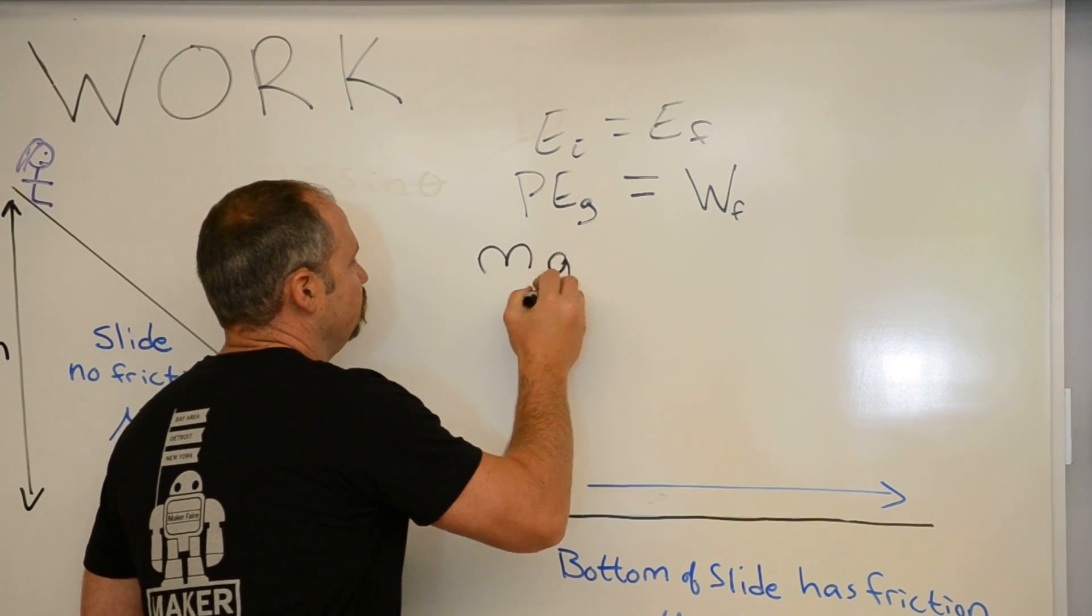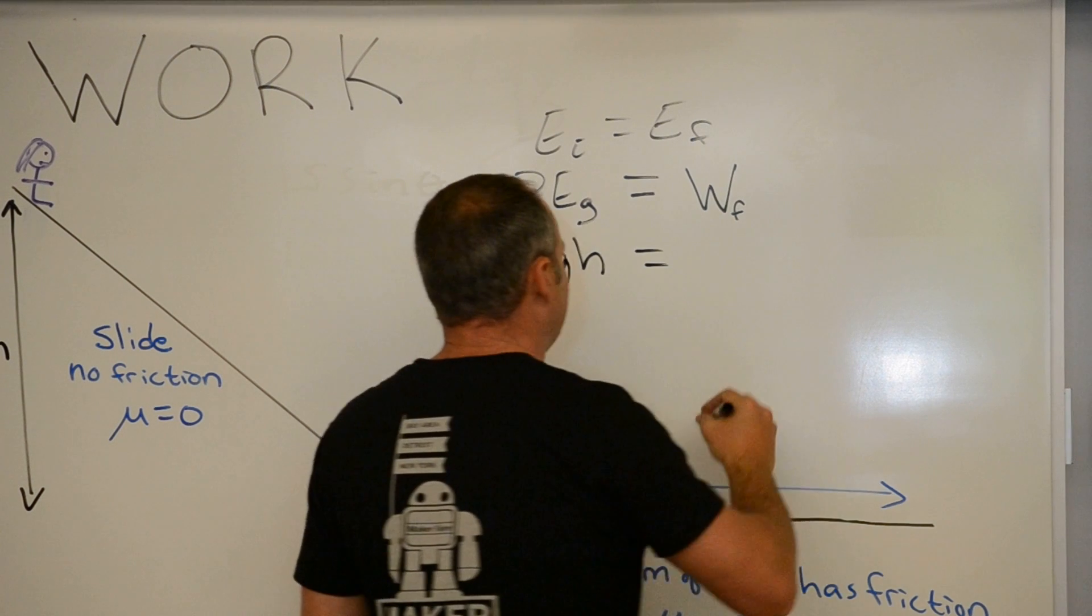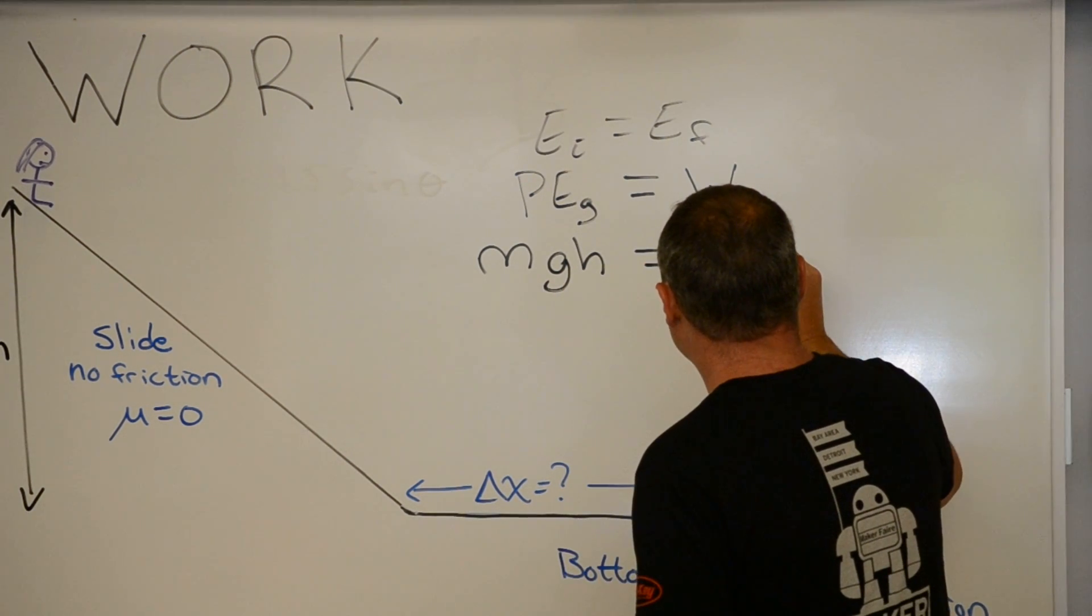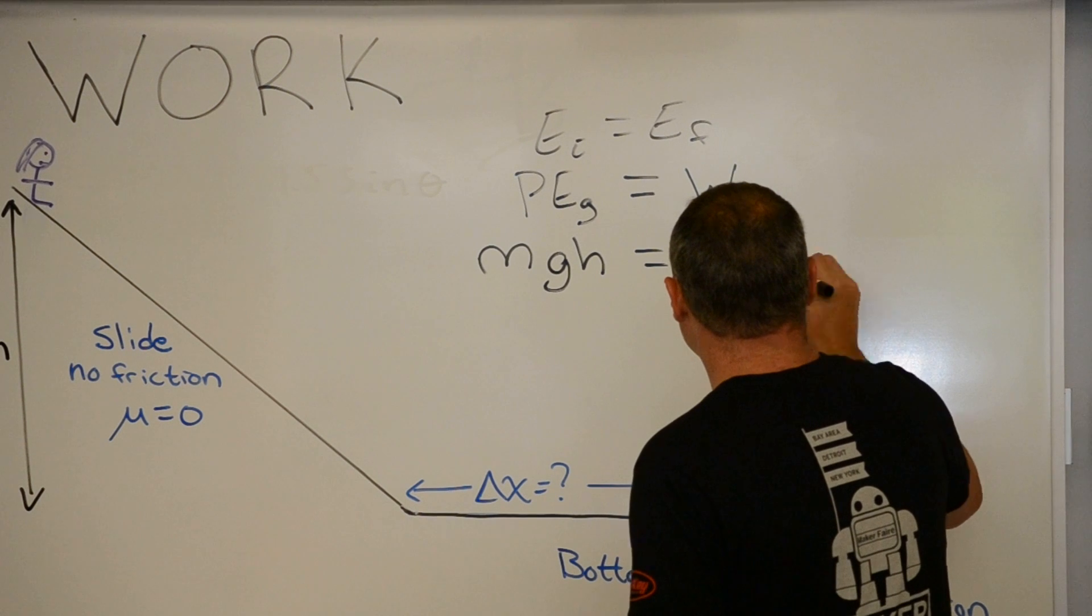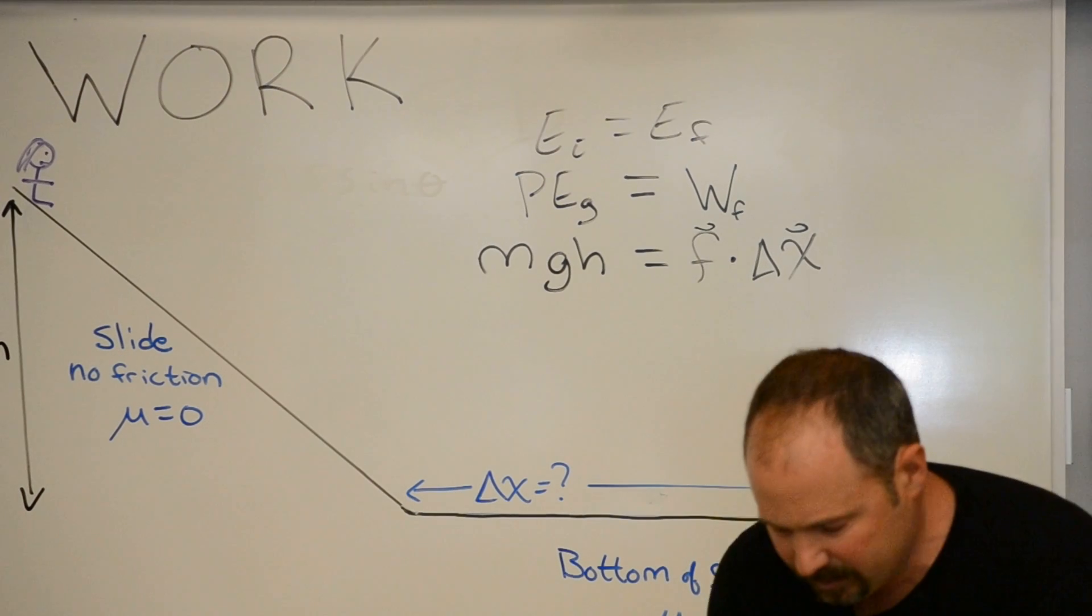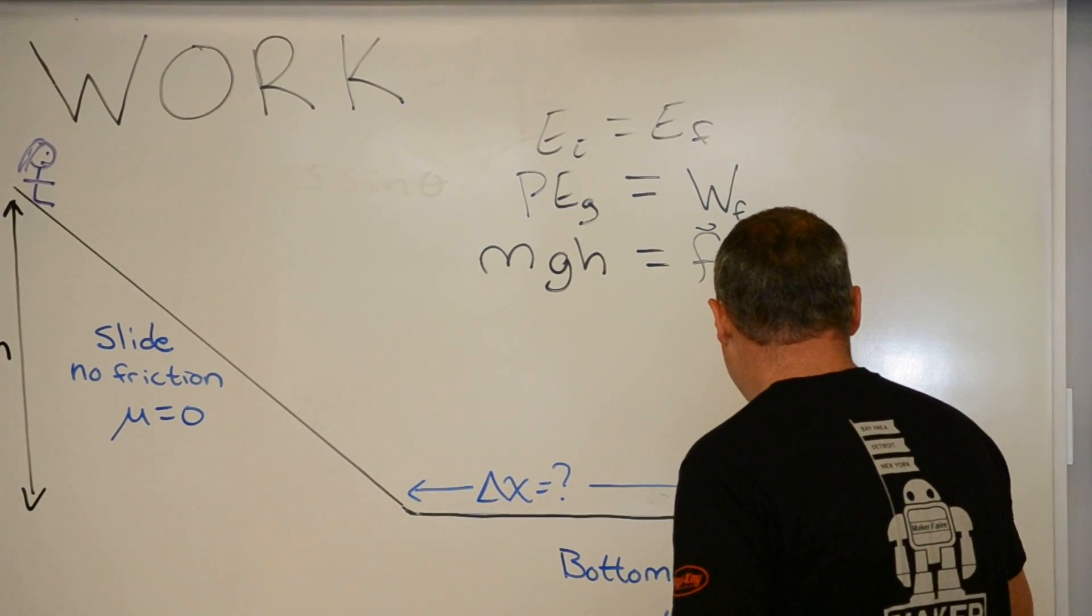Let's now work on calculating how far she went. Well, potential energy is mgh and that's equal to the work done by friction. We know that the work done by friction is the force of friction dotted into the displacement. So, let's draw the free-body diagram at the bottom. Let's say while she's sliding at the bottom.